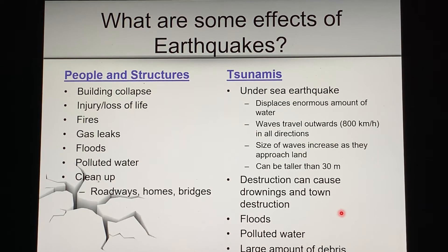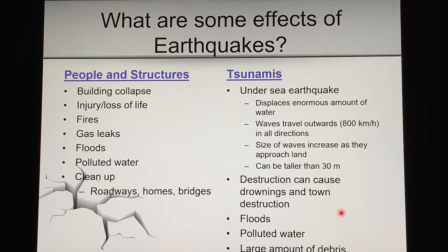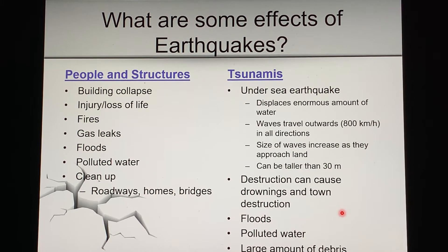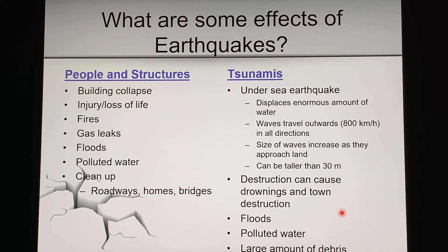And then of course there are tsunamis — undersea earthquakes that displace enormous amounts of water, just like jumping into a bathtub or swimming pool. The waves travel upwards of 800 kilometers per hour. Because they're getting closer to land and the water is getting shallower, the wave height increases — up to 30 meters, about 100 feet. Obviously there's a lot of destruction close to the seashore: floods, polluted water, debris, spilled chemicals, hazardous waste, and cars flipping over with gas and oil leaking everywhere.